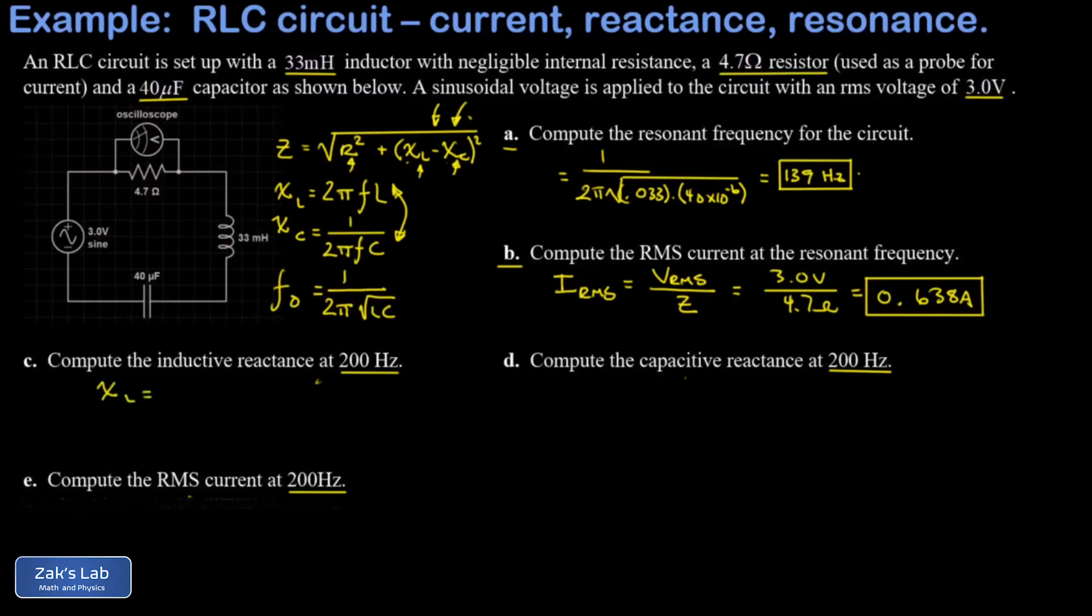Again, that's 2πfL, 2π times 200 times our inductance, which was 0.033. This gives me an inductive reactance of 41.5 Ohms. Remember the reactance of a circuit element is its effective resistance.